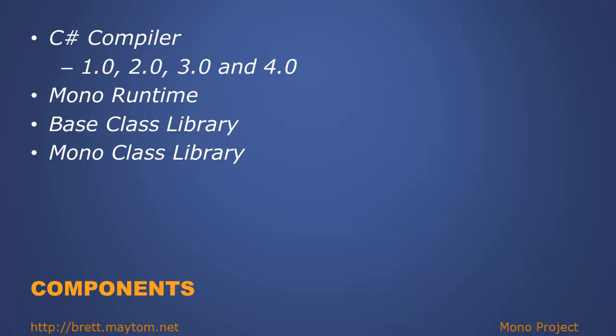When installing Mono, it comes with a C# compiler supporting the .NET 1, 2, 3, and 4 frameworks. Mono includes the Mono Common Language Runtime, the base class library, and also the Mono class library, which has additional functionality and useful classes used by other operating systems.